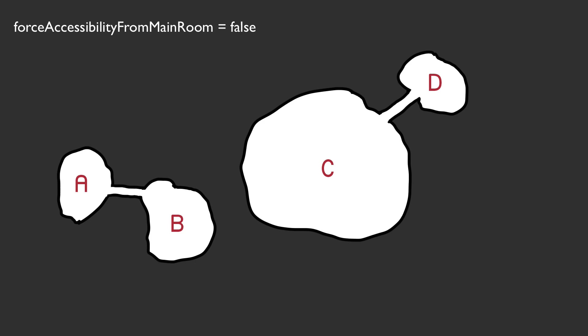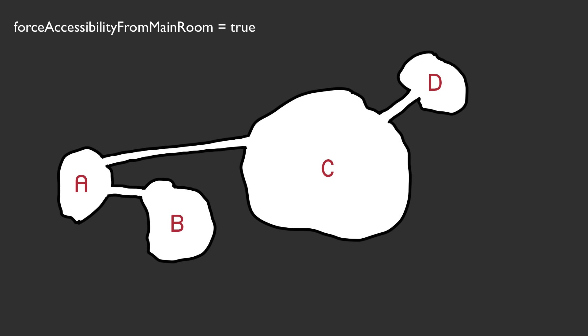So we do the next iteration with forceAccessibilityFromMainRoom equal to true. If we were to do basically the same thing as before — start with room A and compare its distance to all rooms accessible from the main room — we'd compare A to C and A to D, find A to C is best, and connect it. But the problem is it would be better to connect room B to room C and have A connected to C through B.